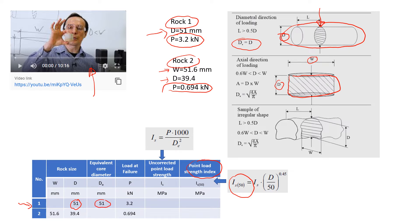For the second case, when we apply a load in the axial direction, we need to know the height which is D—that was 39.4 millimeters—and W stands for the diameter, which was 51.6. In this case, to get this equivalent diameter, we actually need to use this formula. You see that in this formula we have A, which stands for the area. So what we need to do is take D and multiply by W.